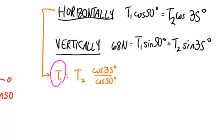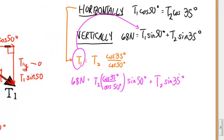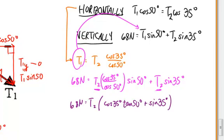I notice that in this second equation, I have a common factor, T2. So I could factor that T2 out and recognize that the sine of 50 degrees divided by the cosine of 50 degrees is equal to the tangent of 50 degrees. Now, I'm trying to find T2, so divide both sides by the parentheses.